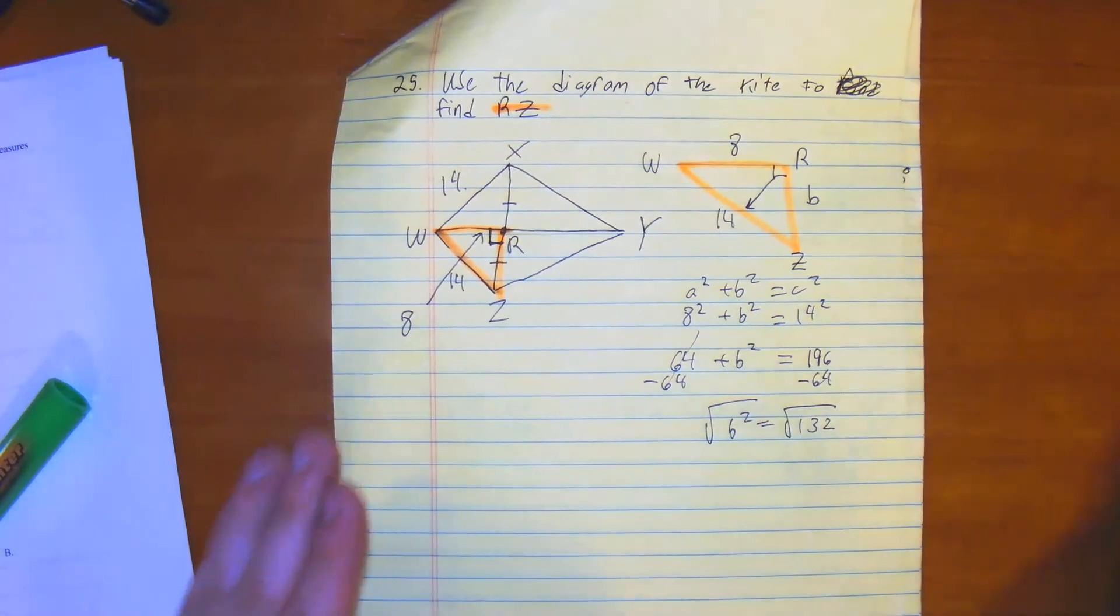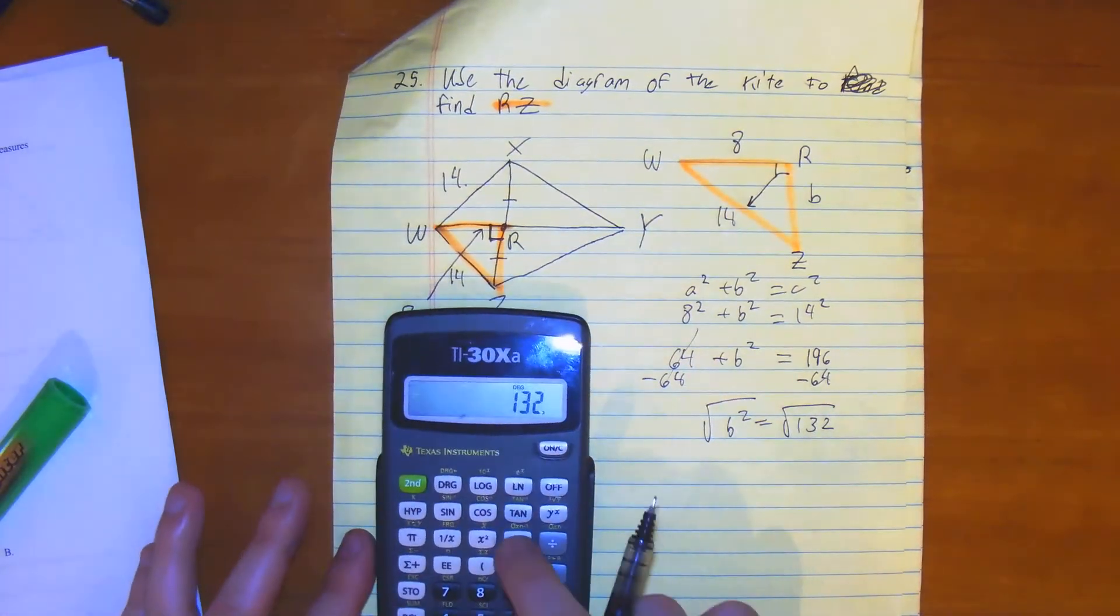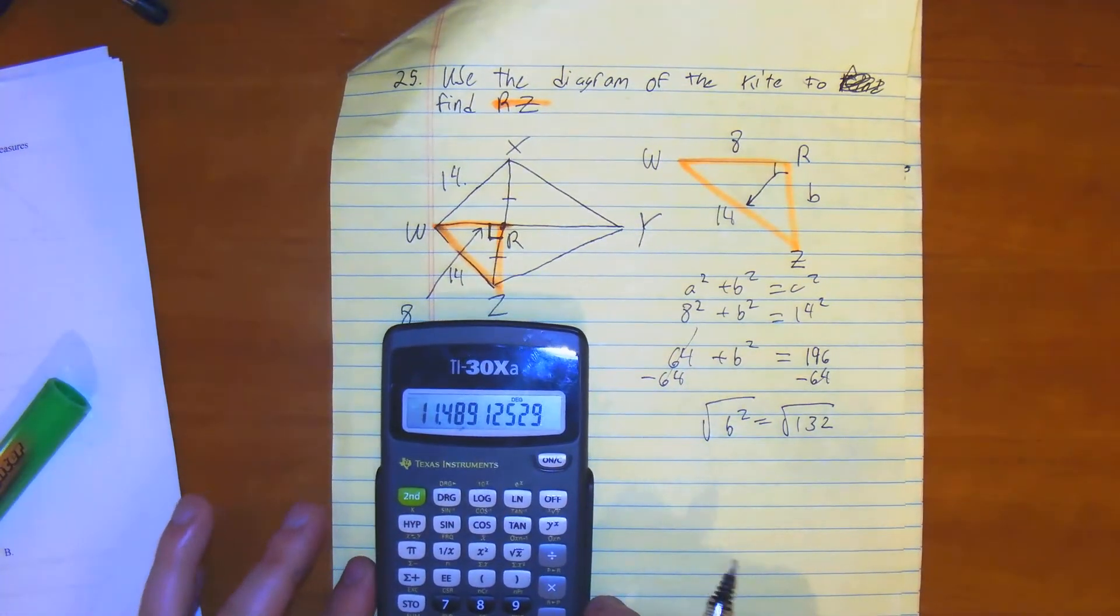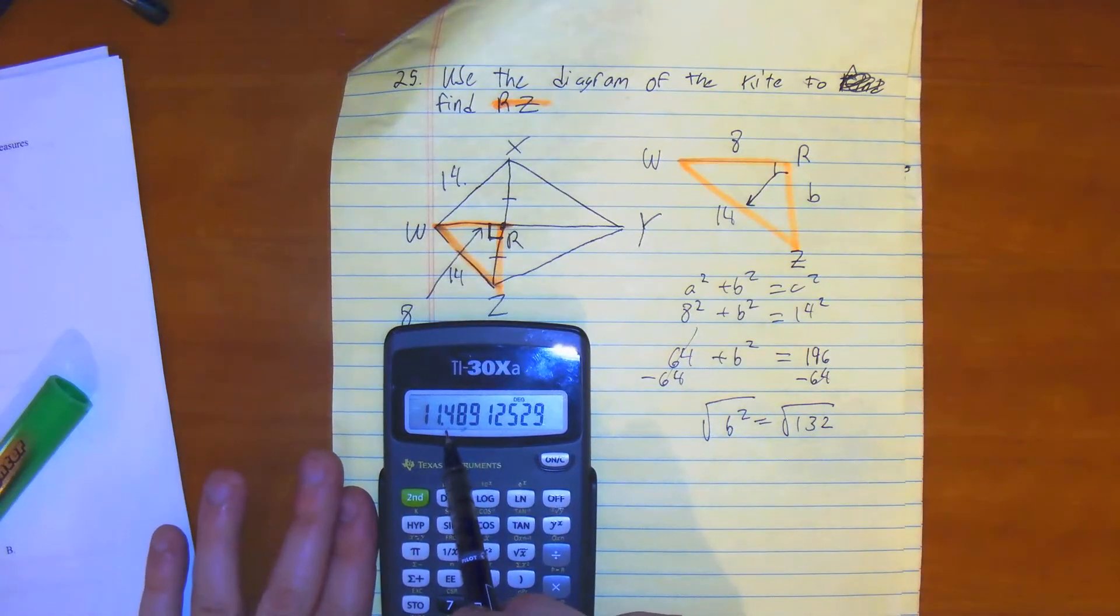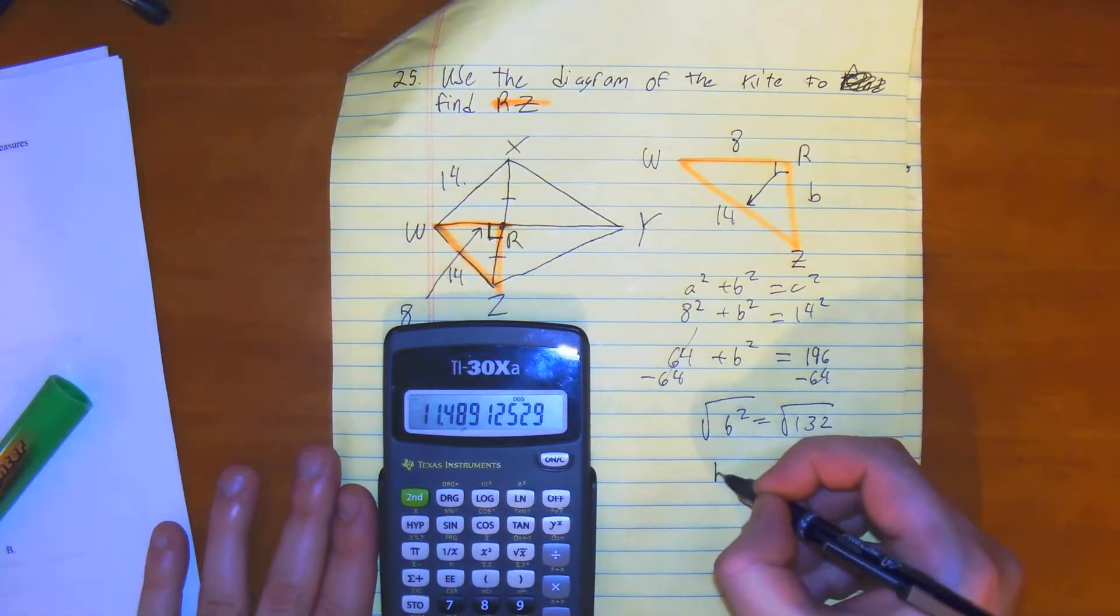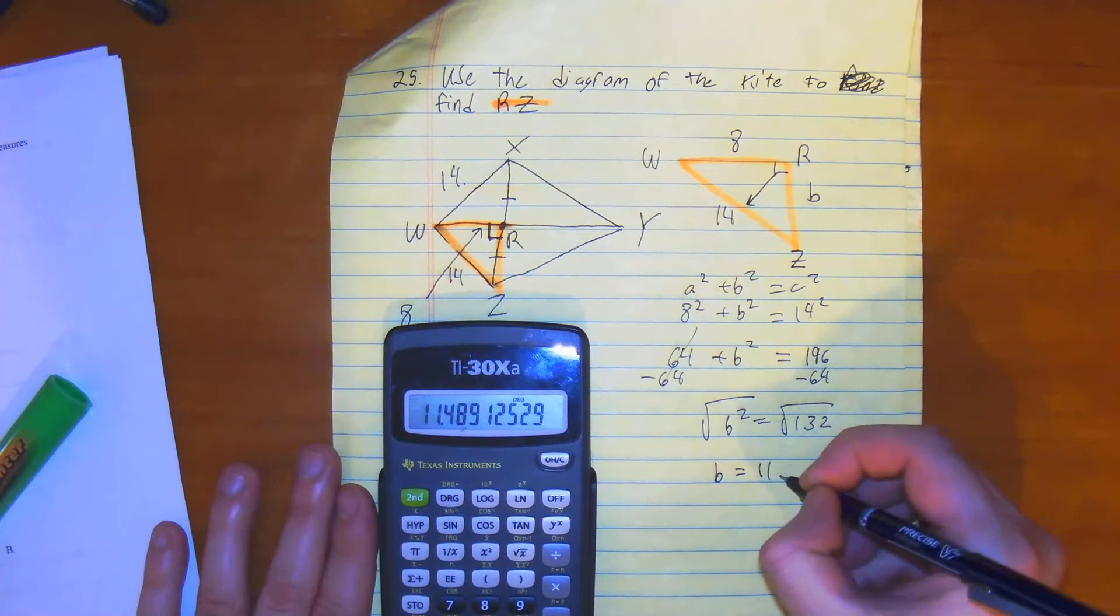Then you square root, square root. So you get the square root of 132 would be about, if we go by the tenths place, it would be 11.5. So we get B is equal to 11.5.